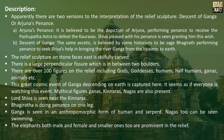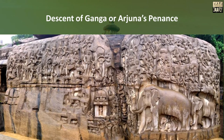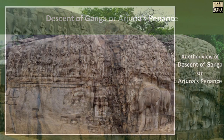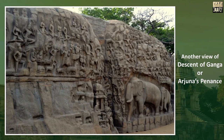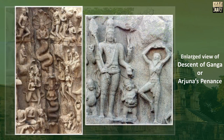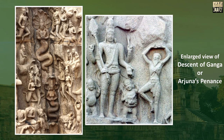The elephants, both male and female, and smaller ones too, are prominent in the relief. These are pictures showing the sculpture of the Descent of Ganga or Arjuna's Penance from multiple views and enlarged details.